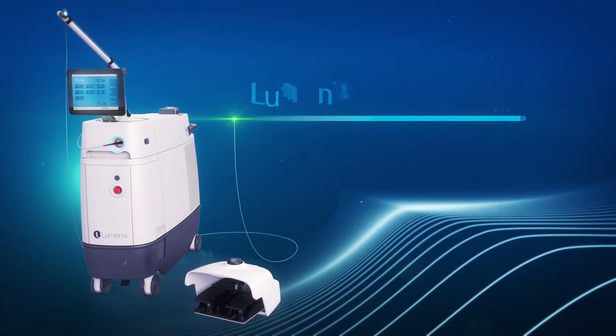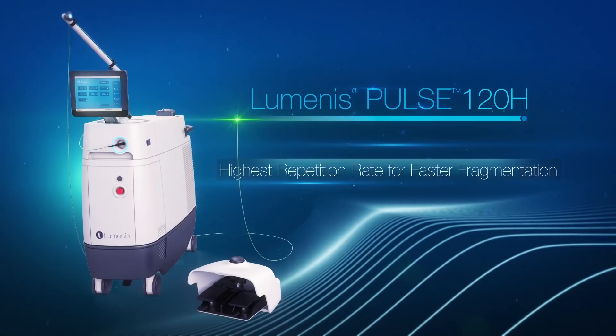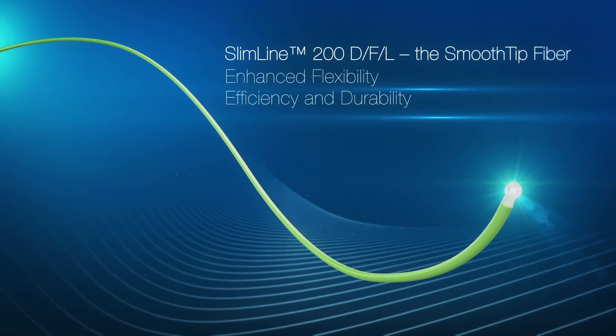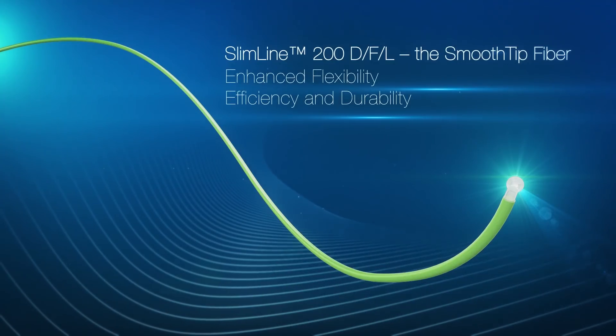The Luminous Pulse 120H laser system and the Slimline 200 DFL fiber are two essential tools designed and developed for superior stone dusting performance.